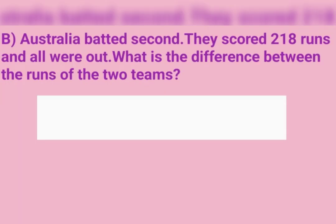Question B: Australia batted second. They scored 218 runs and all were out. What is the difference between the runs of the two teams?